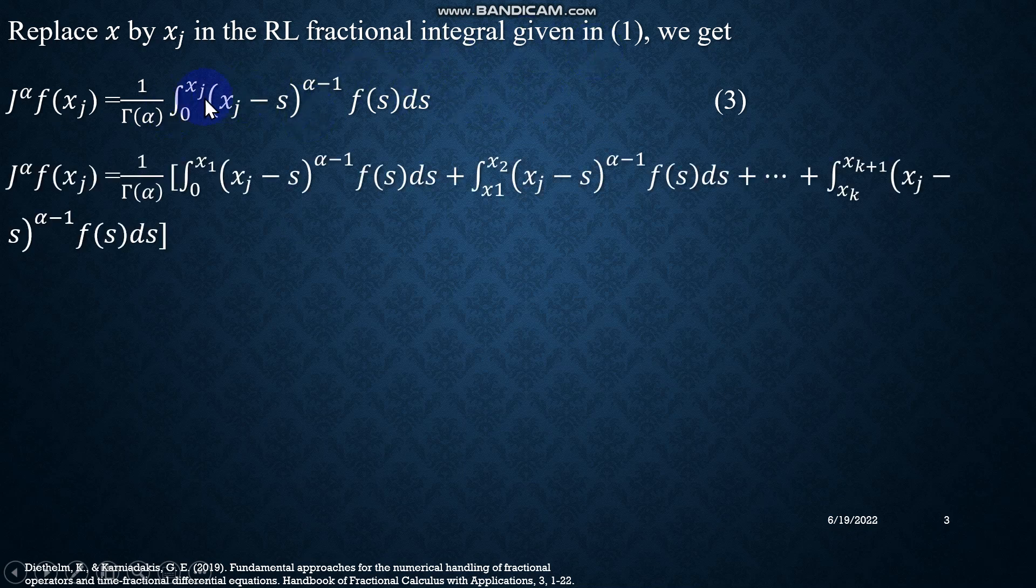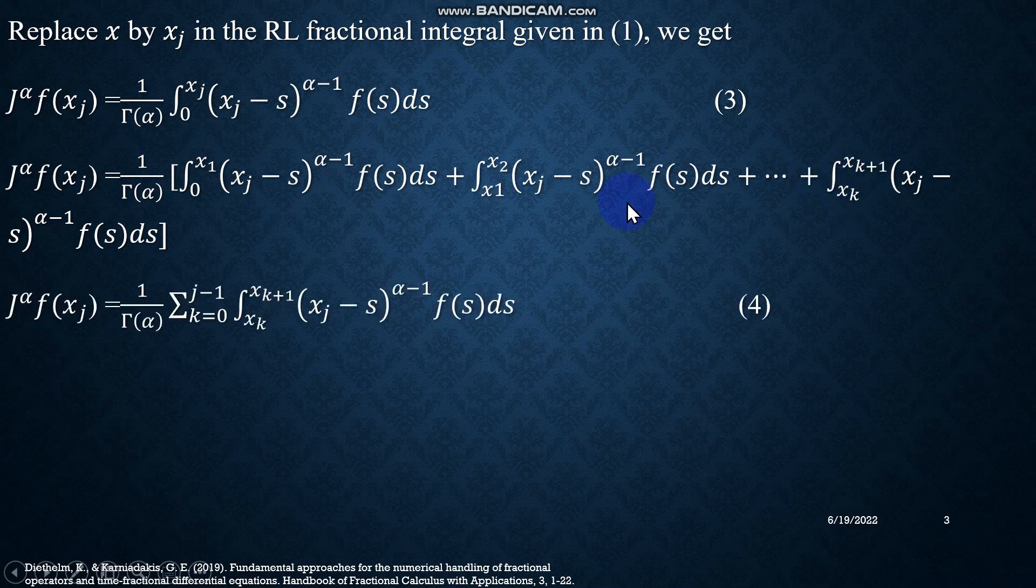Further, in equation number 3, the integration interval from 0 to xⱼ is now broken into several sub-intervals. As you can see, the first term from 0 to x₁, then the second term, the second integral x₁ to x₂, and finally the last integral from xₖ to xₖ₊₁.